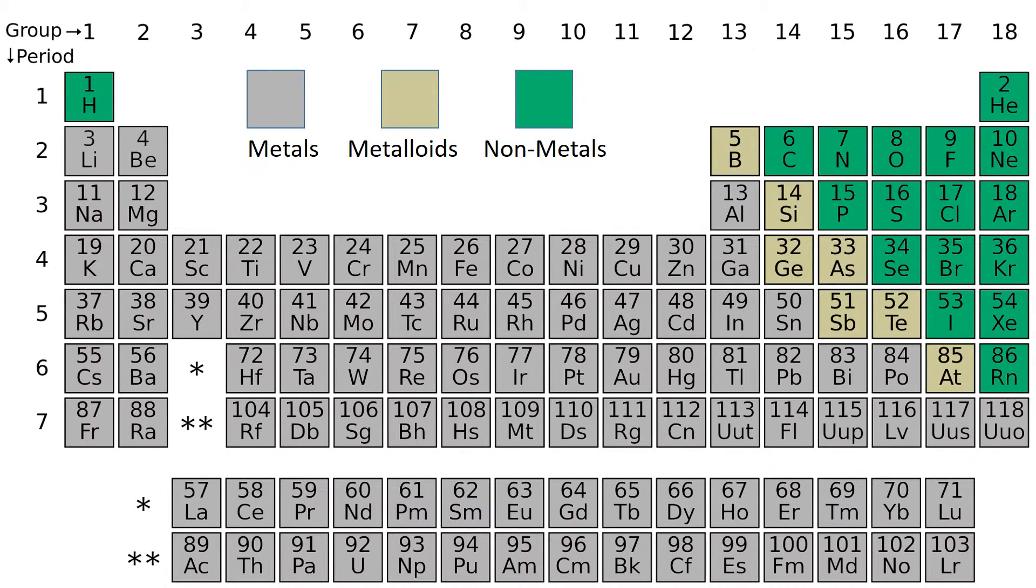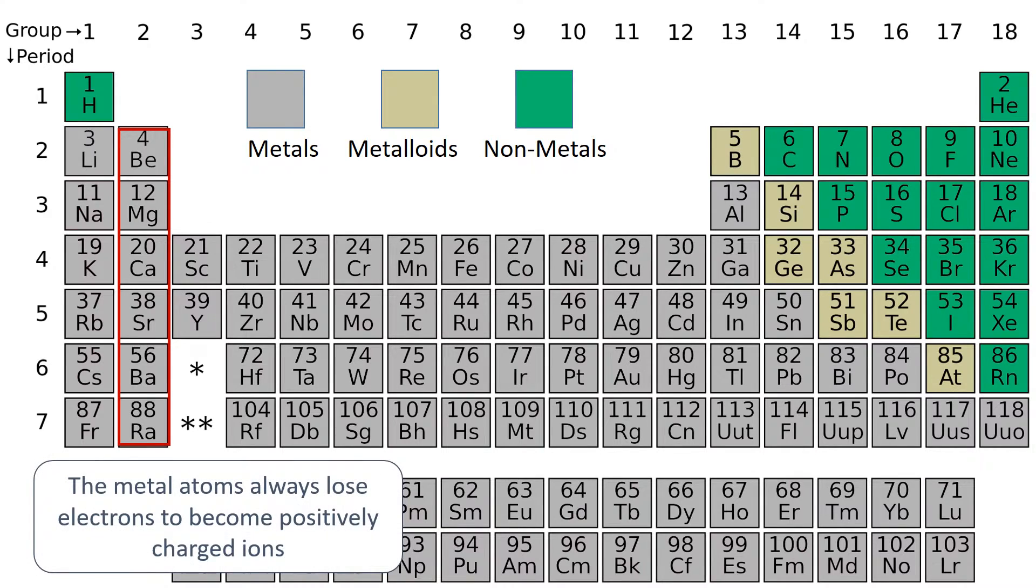Going back to the periodic table, you can start to see how this will occur with other elements. All the metallic elements in group 1 have one electron in their outer shell to donate, and in group 2, they have two electrons to donate. Due to the fact that it's easiest to donate electrons, the metal atoms will always form the positively charged ions.